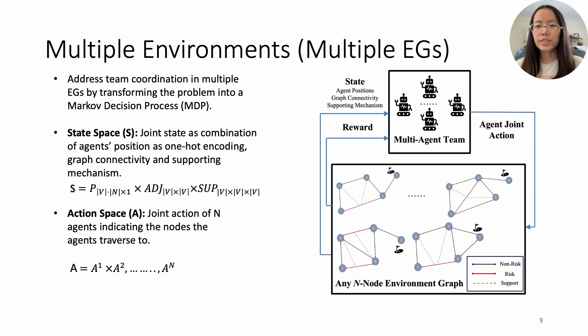In the second part, we address team coordination for any N-node graph. State space combines agent position, graph connectivity, and support mechanism, while the action space remains the same as the single EG.